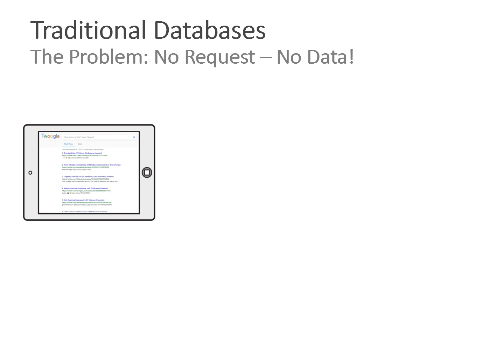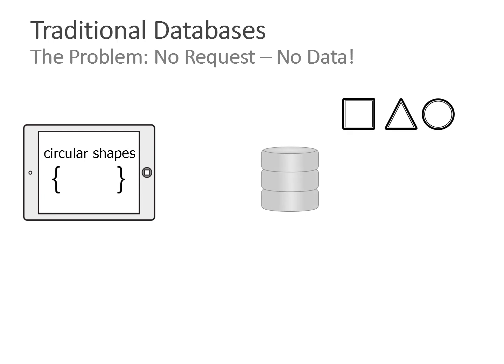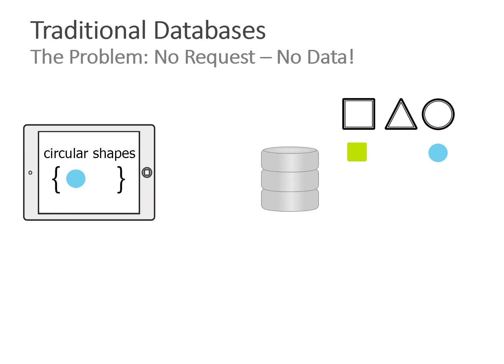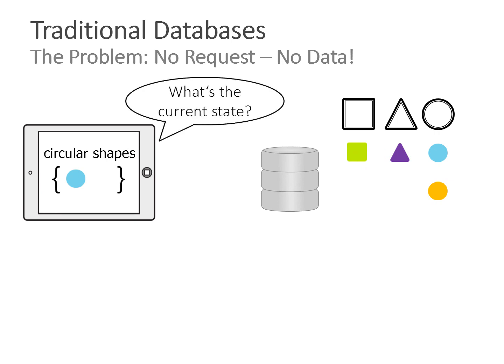Let's start with traditional databases. Consider a real-time application that displays data from the database and provides real-time updates — a simple token application that displays all circular shapes. Think of a database as storage of different shapes. When the application starts, it displays the current state. Over time we get an update like a blue bubble, but sometimes things get written and the application is not refreshed, causing a divergence between database state and application state.